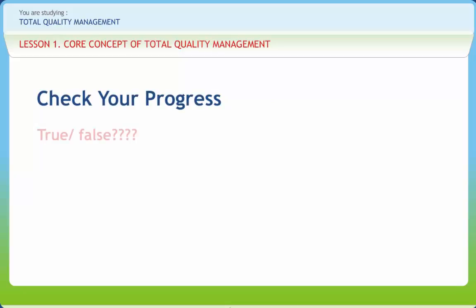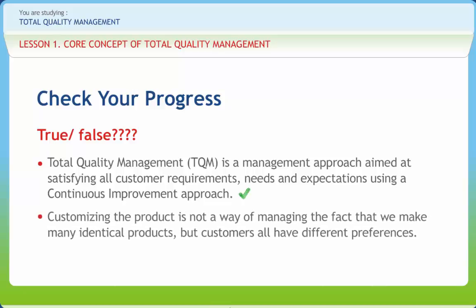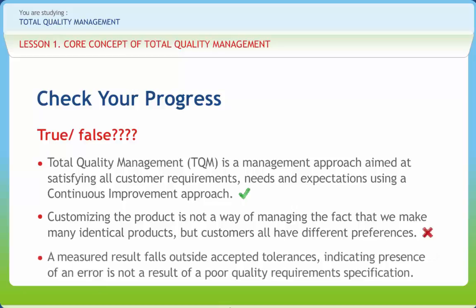Let us check if we have understood the concepts discussed in this lesson. First: Total Quality Management is a management approach aimed at satisfying all customer requirements, needs, and expectations using a continuous improvement approach — Right or Wrong? Right. Second: Customizing the product is not a way of managing the fact that we make many identical products but customers all have different preferences — Right or Wrong? Wrong. Third: A measured result falling outside accepted tolerances indicating the presence of an error is not a result of a poor quality requirement specification — Right or Wrong? Right.